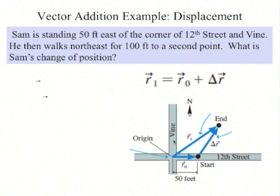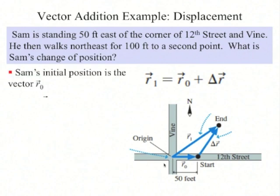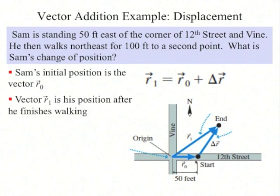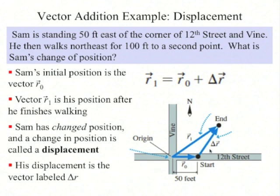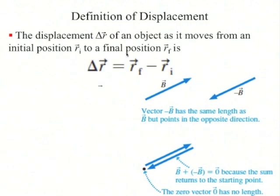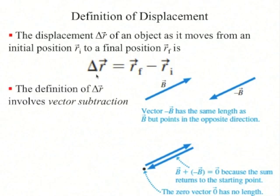Example: Sam is standing 50 feet east of the corner of 12th Street and Vine. He then walks northeast for 100 feet to a second point. What is Sam's change of position? Sam's initial position is vector r₀ and his final position is vector r₁. Sam has changed his position, and a change in position is called displacement. His displacement is labeled delta r, where the triangle is the Greek letter delta. To define displacement, you perform a vector subtraction: delta r equals r_f minus r_i.